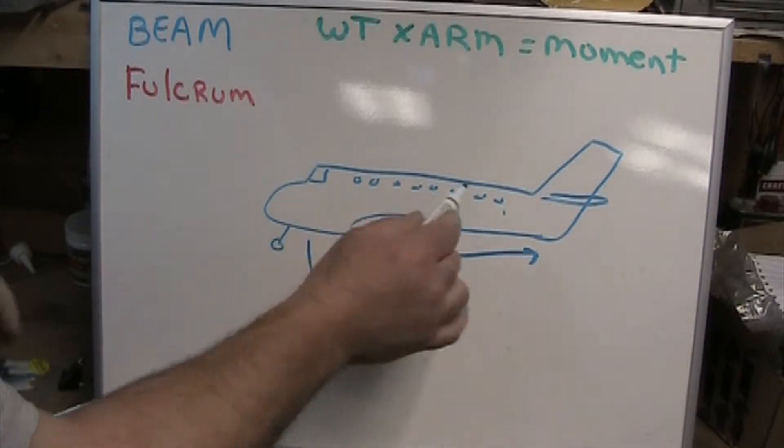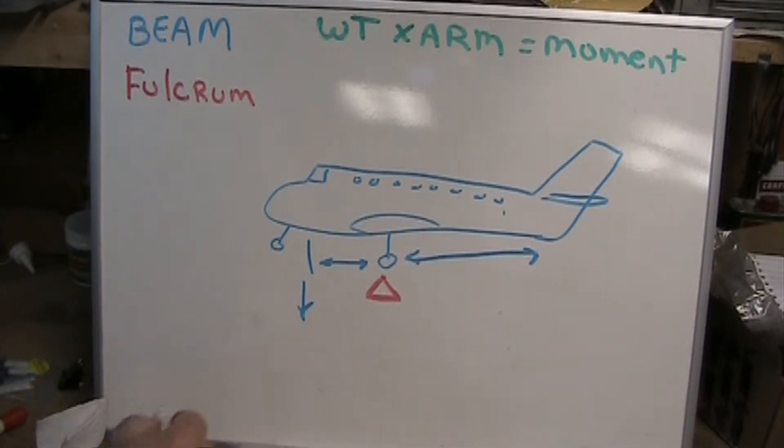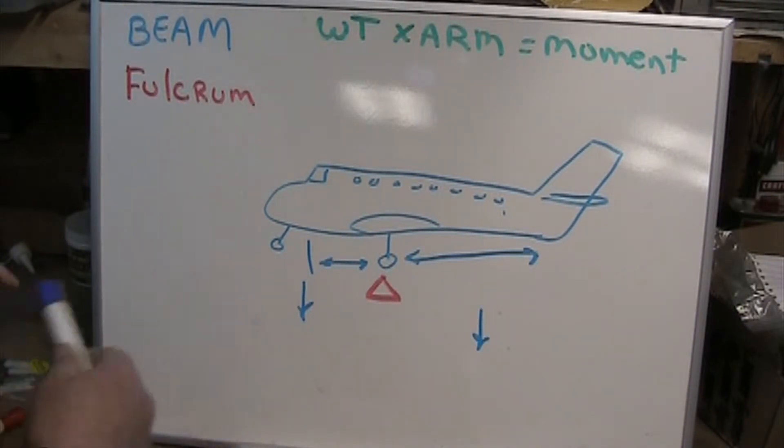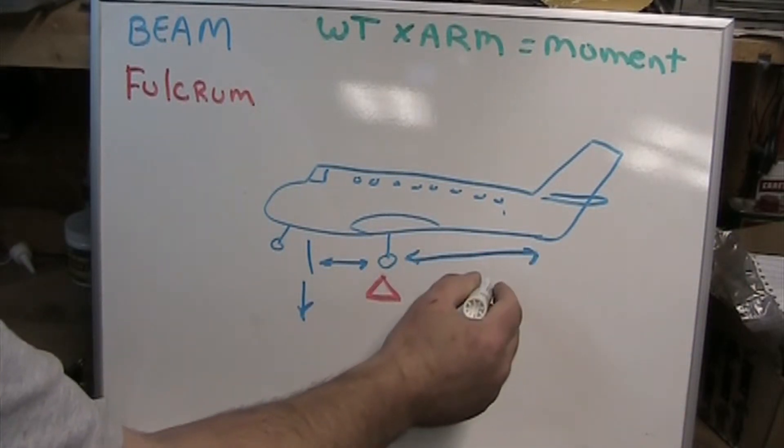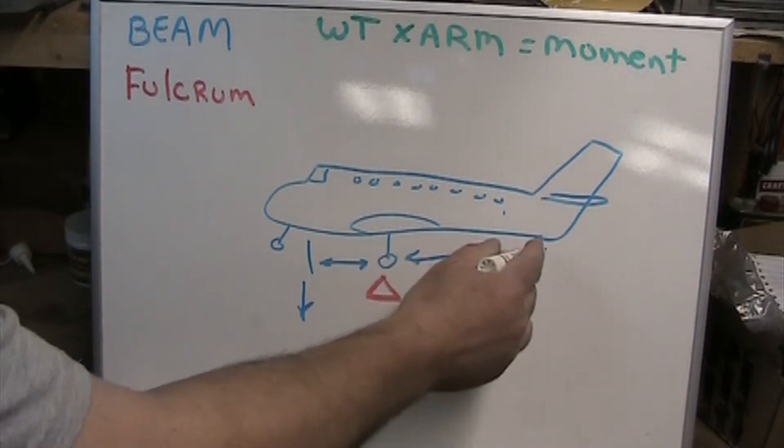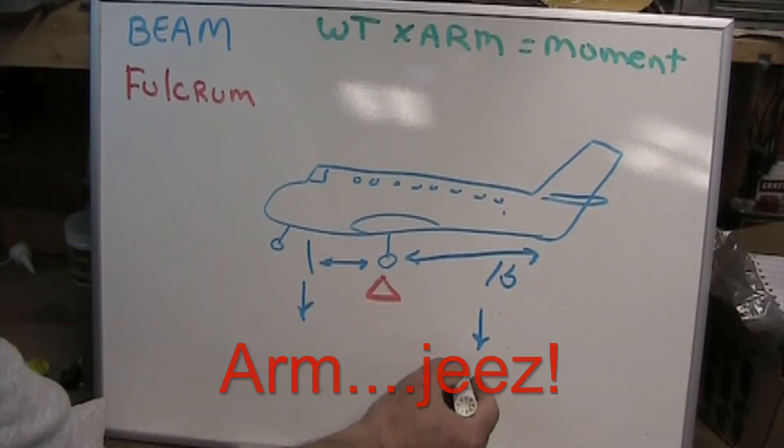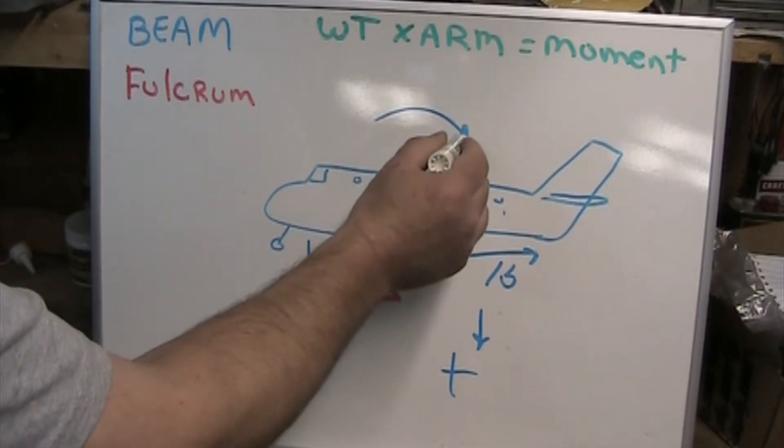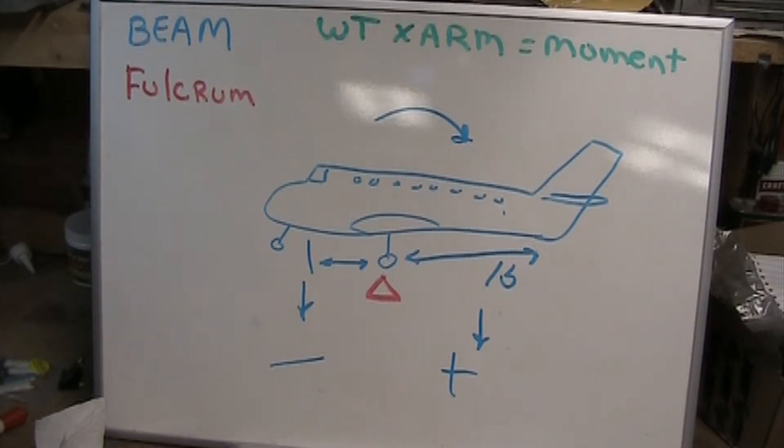With this airplane being empty, we've only got a certain amount of weight on this side and a certain amount on this side. As we continue to load the airplane towards the back, we start adding more and more weight. This weight times this moment starts to become greater than this, and the whole airplane goes over.